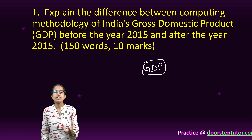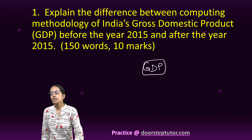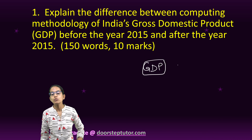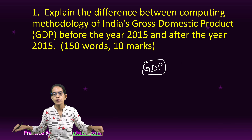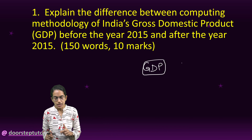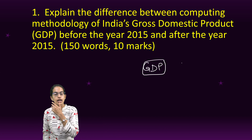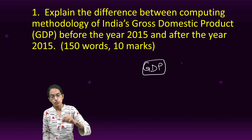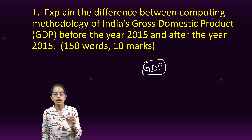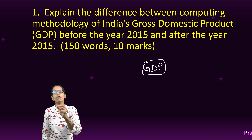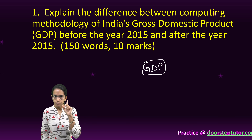GDP is the Gross Domestic Product — that means the total output produced within the domestic boundaries of India. That means any worker working in India who is producing would be counted under GDP. It won't count a foreign company operating outside India.